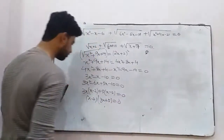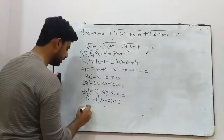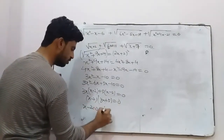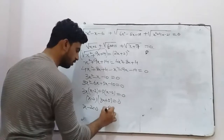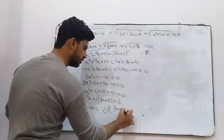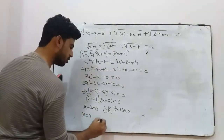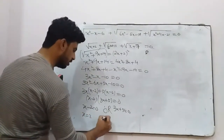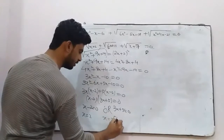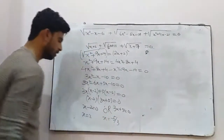The product of two terms equals 0, so either x minus 2 equals 0 giving x equals 2, or 3x plus 5 equals 0 giving x equals negative 5 upon 3.